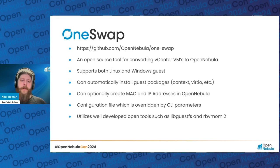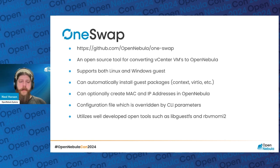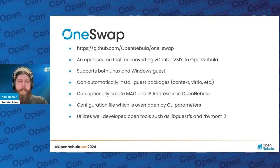We also offer the ability to install guest packages — these are OpenNebula contextualization packages for your network configuration once the VM boots up in its new place. We can also install VirtIO drivers, especially for Windows, to utilize VirtIO devices on KVM systems once it boots up, as well as QEMU guest agent. Optionally, you can have it create the MAC address and IP address listed in vCenter for the machine in OpenNebula. There are options to skip these if you don't want to retain the same hardware ID and IP address, but if you want to retain the same network structure, that ability is there.